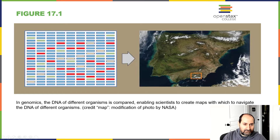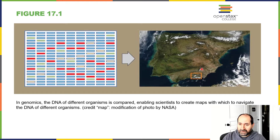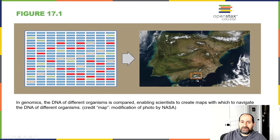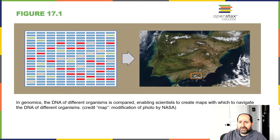What you're seeing here on the left is called a microarray, and what it allows scientists to do is determine what genes are turned on and what genes are turned off in a particular organism. We can use these microarrays to compare different species or the same species from two different locations, and look at differences in how genes turn on and off.